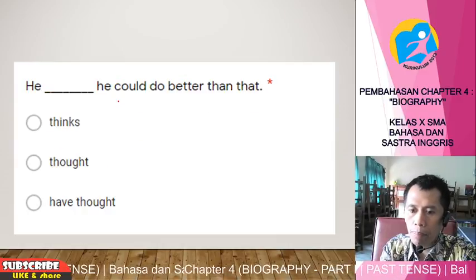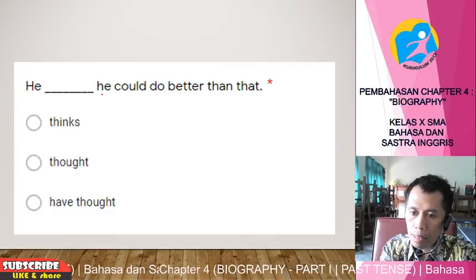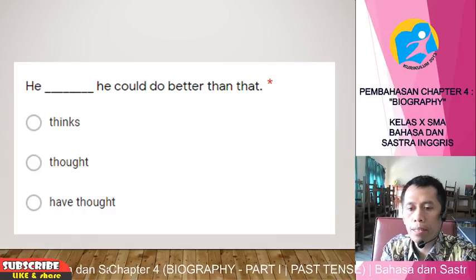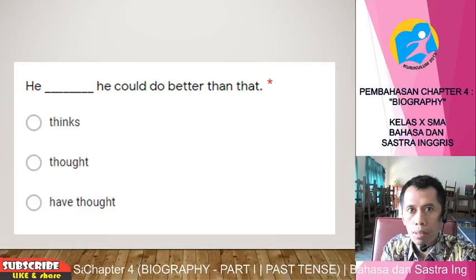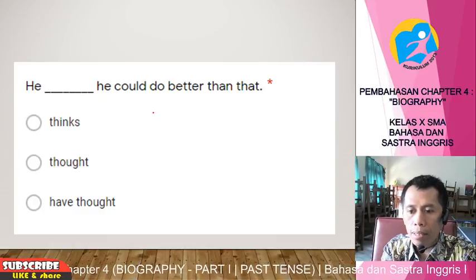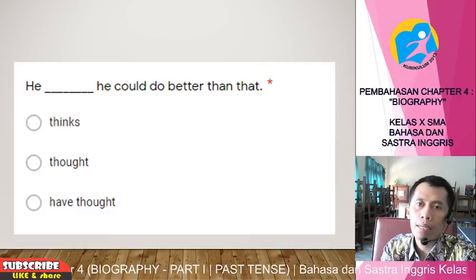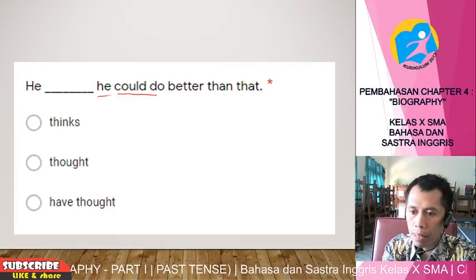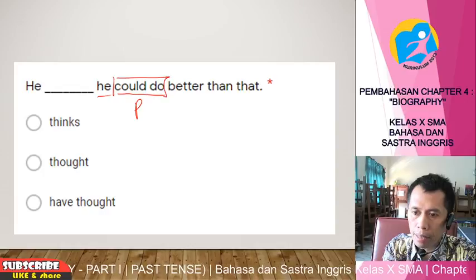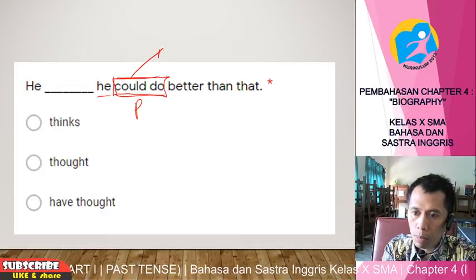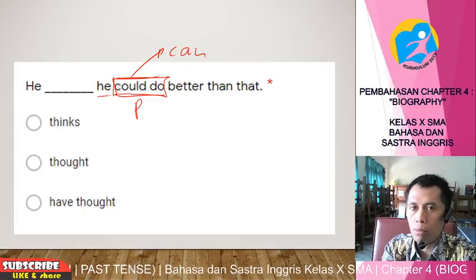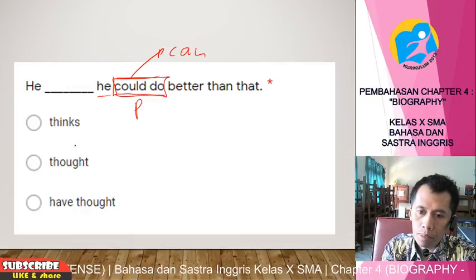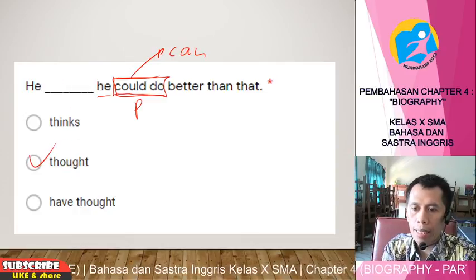'He thought he could do better than that.' Fill in: 'think,' 'thought,' or 'have thought.' No time adverb is present, so look at the predicate. There is 'could' — the past form of 'can' — which is already verb 2, indicating past tense. So the other verb should also be verb 2: 'thought.' Answer: 'He thought he could do better than that.'